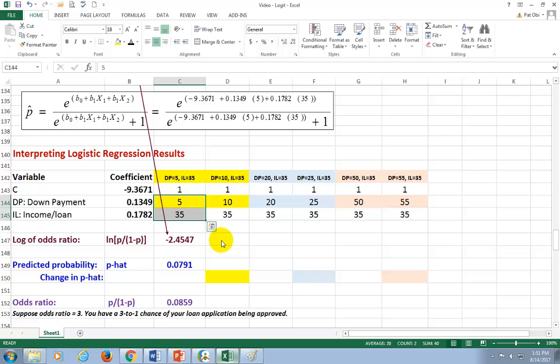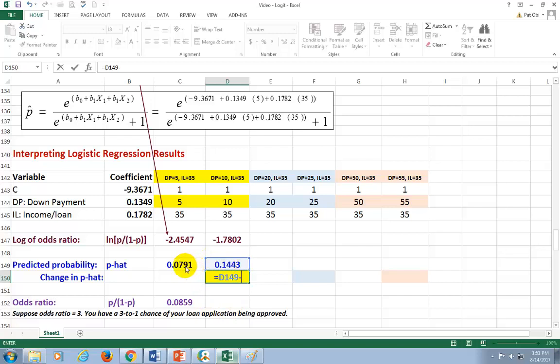Now, how about if you choose to kick up your down payment by 5%, from 5% to 10%. So, for that, I'm just going to click here and take it across. So, this kind of increases your log of odds from negative 2.45 to negative 1.78. But, more importantly, what's the probability that corresponds to this? All right, since I've already done it here, I'm just going to copy it across. That inches up a tiny bit, not by much. In fact, the change here is this minus this. A change of only 6.5% in probability.